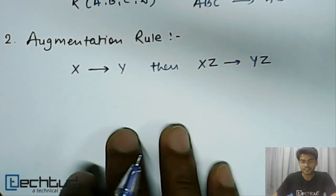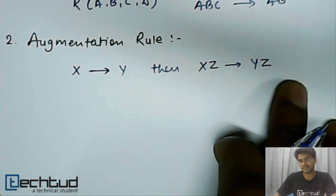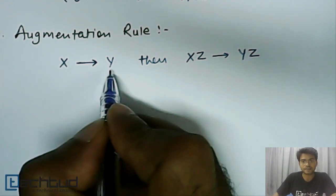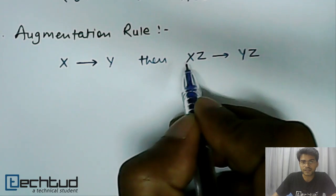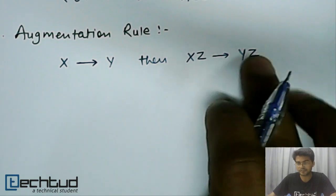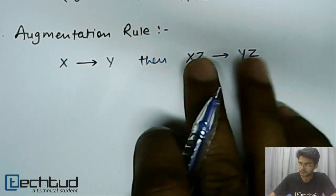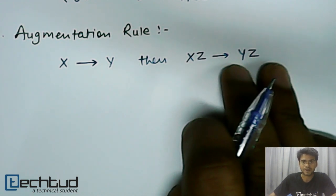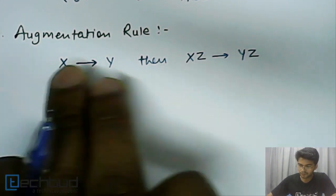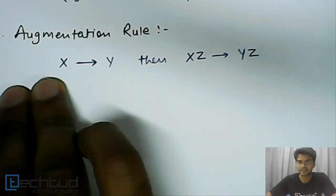The next rule is the augmentation rule. Augmentation rule says if x can determine y, then xz can determine yz. This is again obvious. If x can determine y and we add z to both sides, then xz can determine yz. From the reflexive rule, we know z can determine z — if z is known, z is known. So x determines y and z determines z, which gives us xz determines yz. That is the augmentation rule.